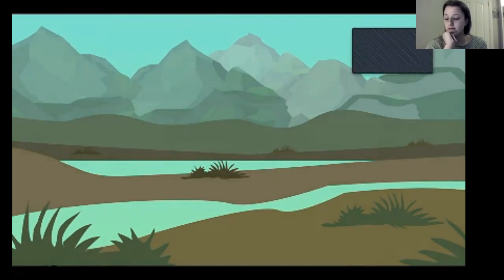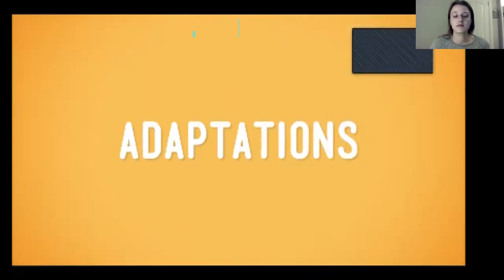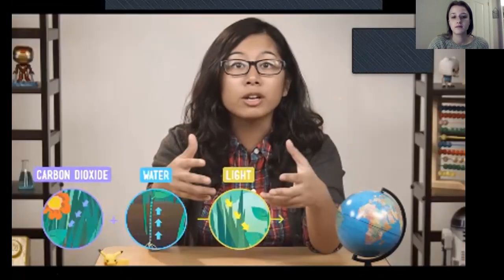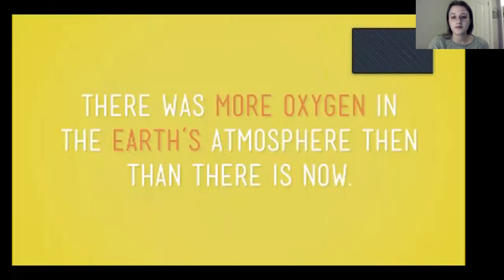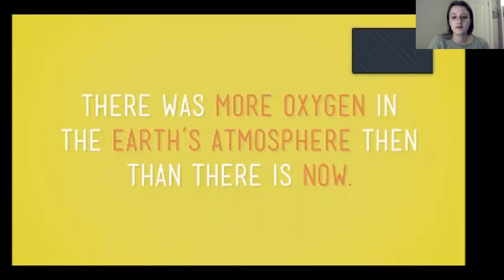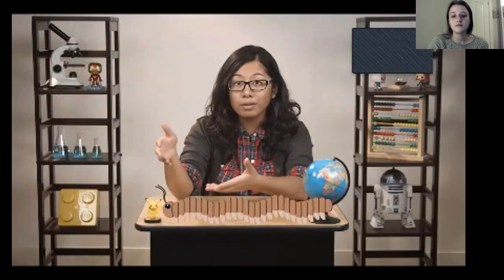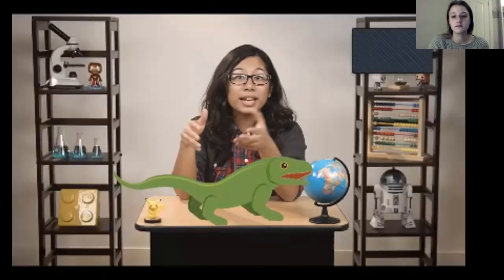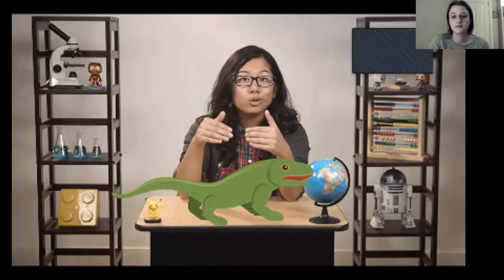Over several million years, the climate became drier and cooler. Many plants didn't have adaptations to survive in this new cool, dry environment, so they became extinct. Plants are at the bottom of the food chain — they make chemical energy through photosynthesis and release oxygen. There was more oxygen in the Earth's atmosphere then than now, enough to support those giant insects. But when the plants became extinct, the animals that depended on all that oxygen could no longer survive. Farewell, giant insects — and the amphibians that ate them had less food too.